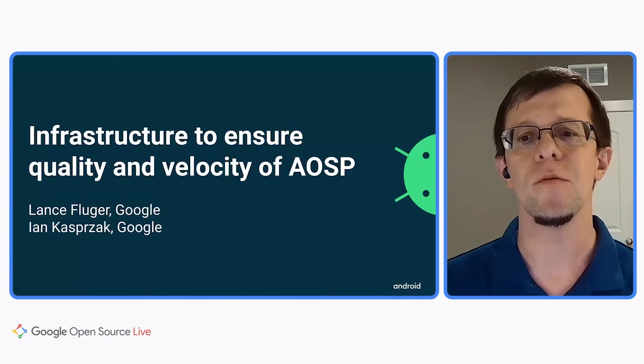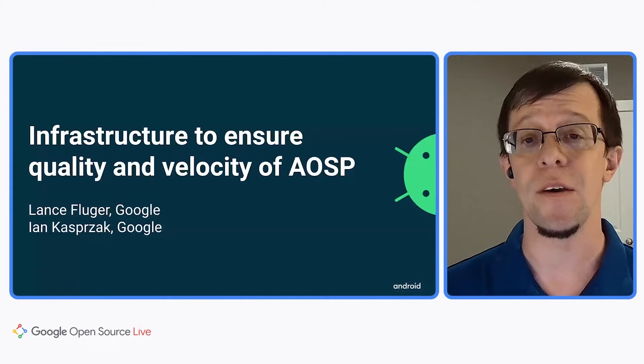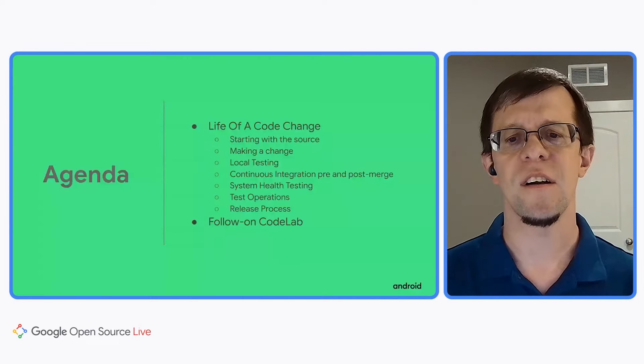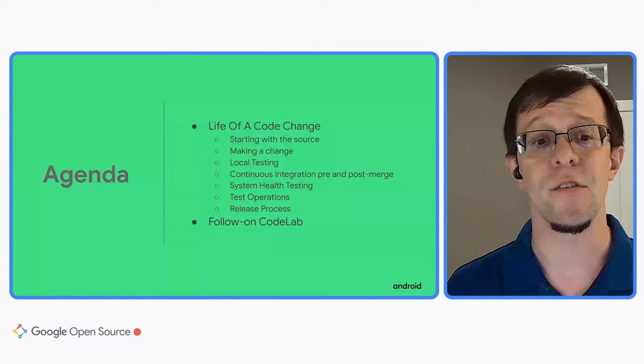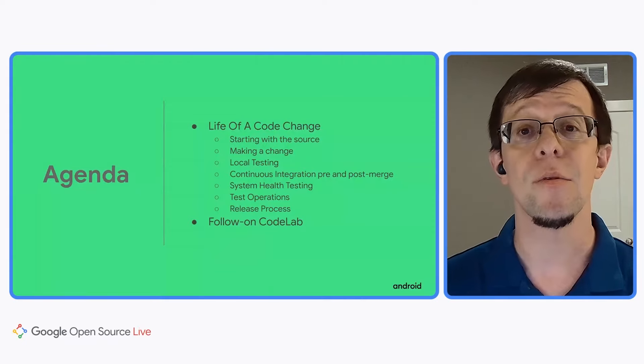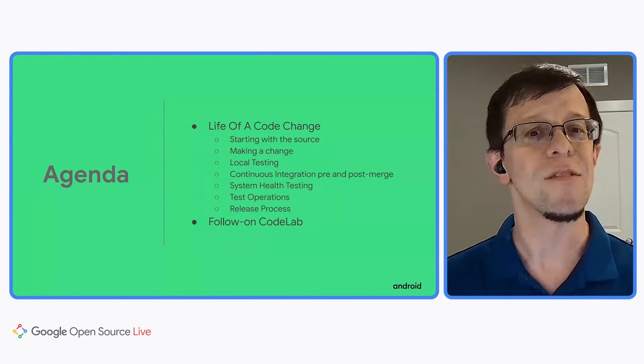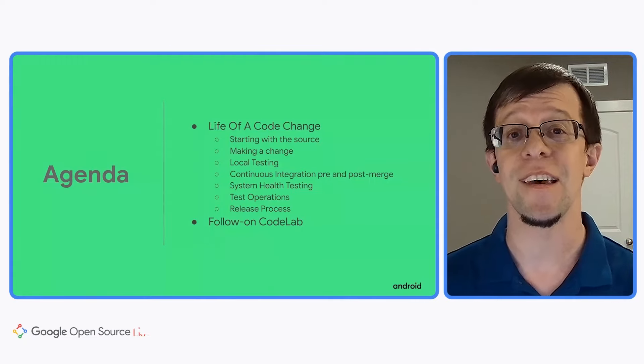Hello, I'm Ian Kasperczak, technical lead for the Android open source team. My co-presenter today is Lance Pflueger, engineering manager leading the system health and multi-device testing efforts for Android. Today we'll be talking about how we use Google's infrastructure to ensure both quality and velocity when developing Android in the open source. We're going to start by following the life of a change list (CL) that is created, reviewed, tested, and submitted through the Android open source branch.